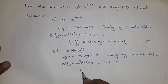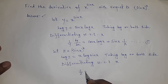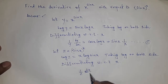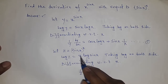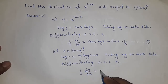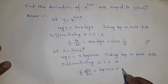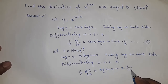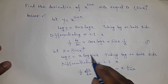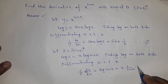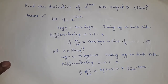The derivative of log z gives 1 by z times dz/dx. On the right side: derivative of x is 1, so log sin x, plus x times derivative of log sin x, which is 1 by sin x times the derivative of sin x, equal to cos x.